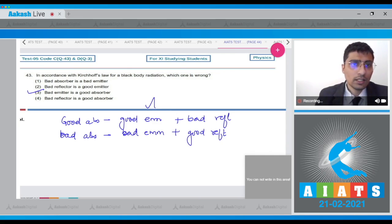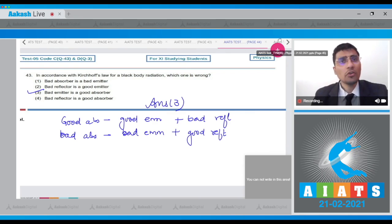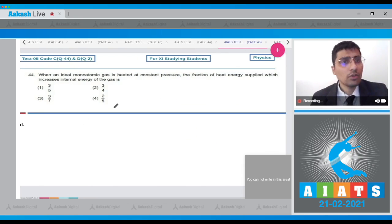Therefore, for this question the correct answer is option number 3, as it is a wrong statement. Moving on to question 44. When an ideal monatomic gas is heated at constant pressure, the fraction of heat energy supplied which increases the internal energy of the gas is?